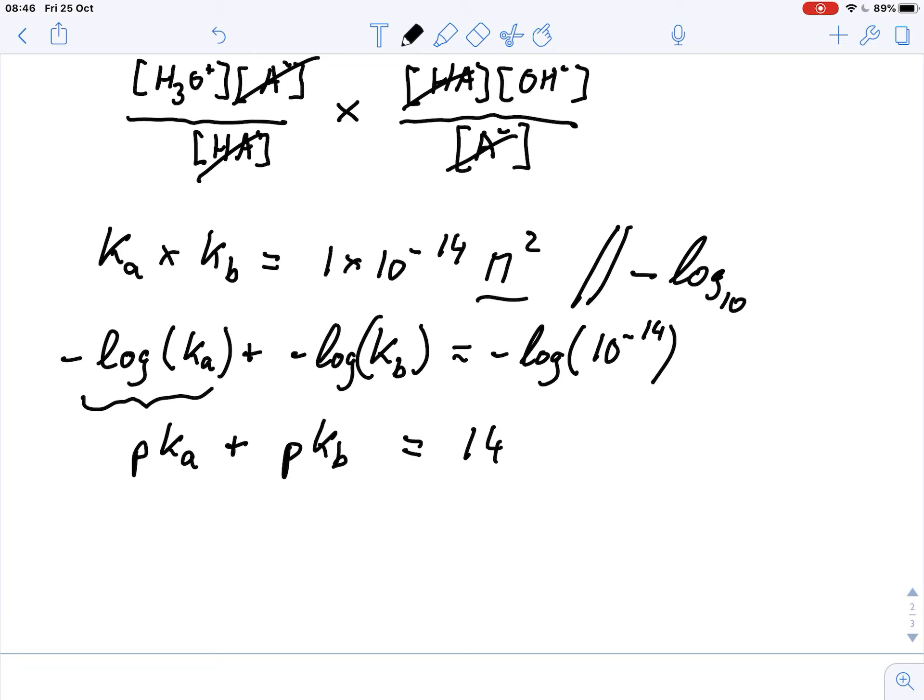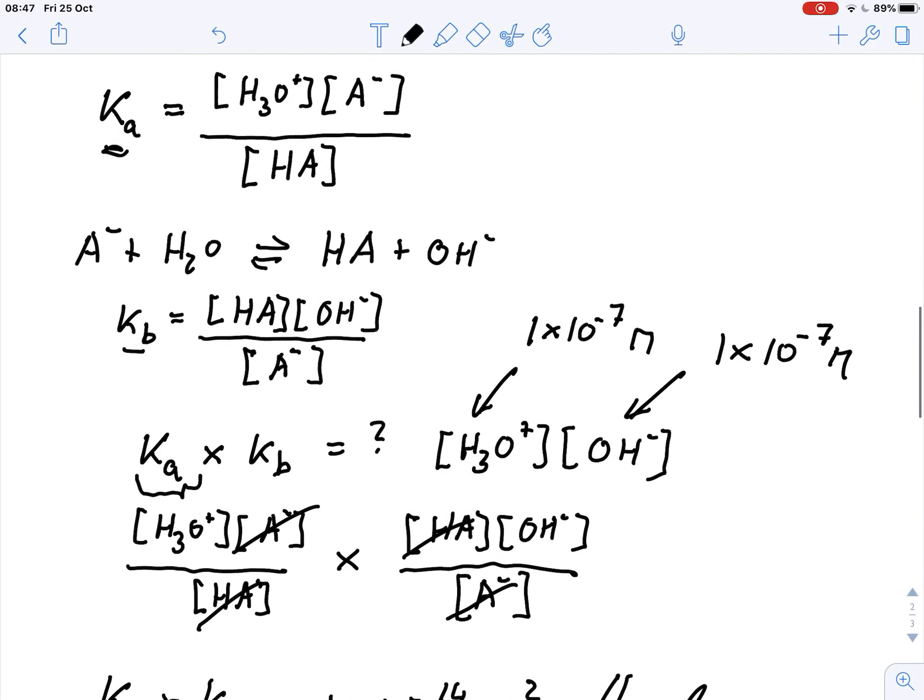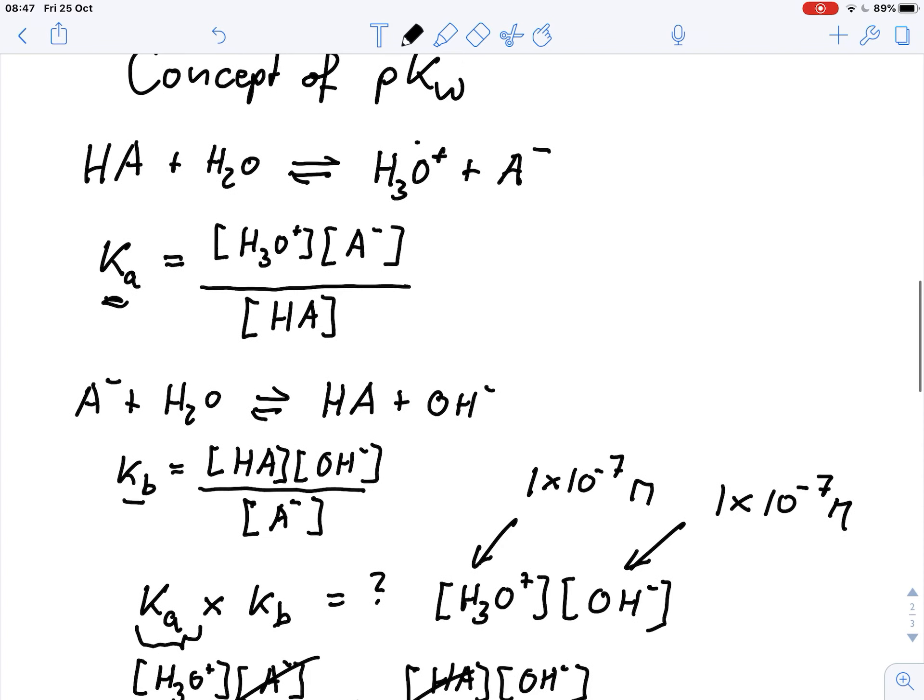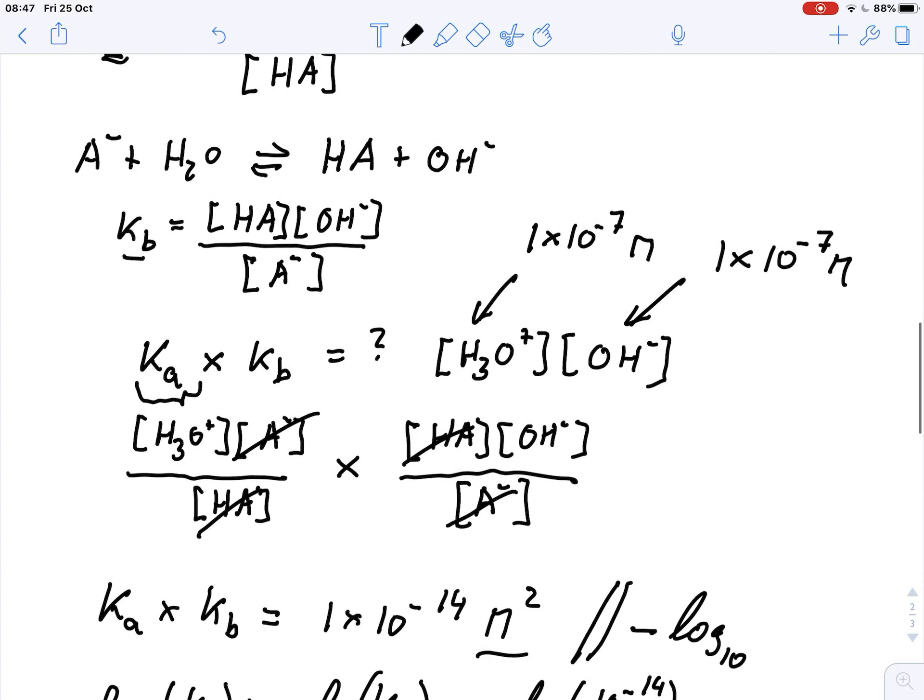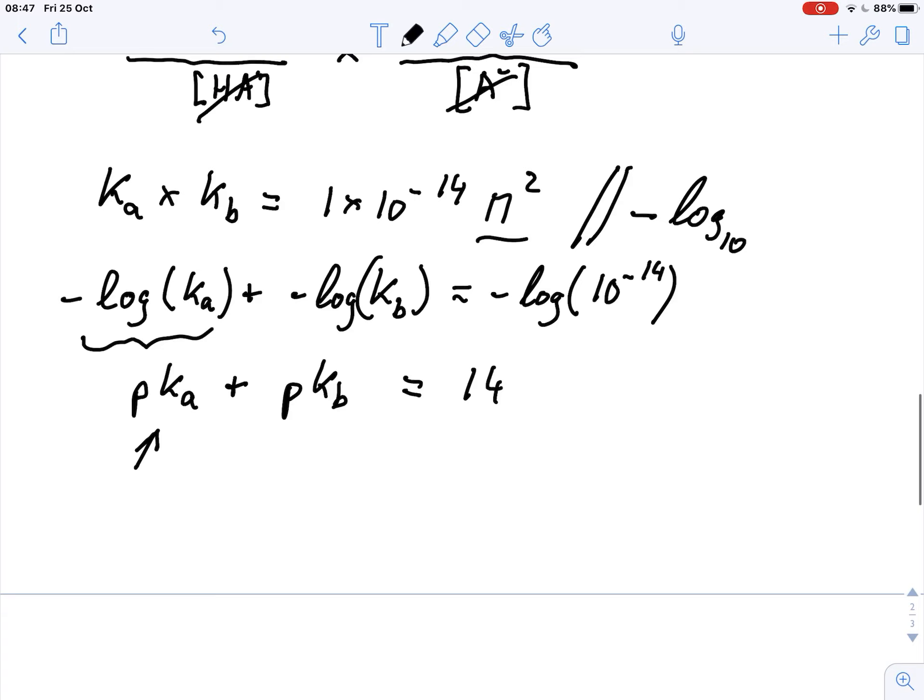So what we can say is that the pKa of any acid, and we haven't used a specific acid here, so the pKa of any acid plus the pKb of the corresponding conjugate base